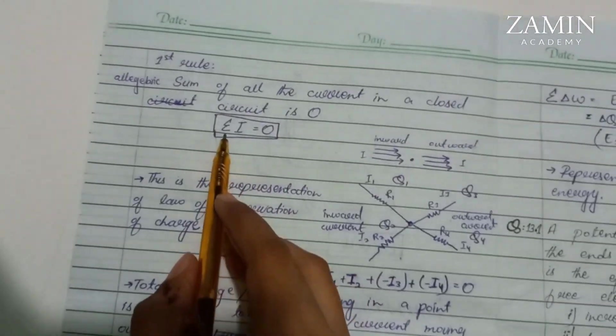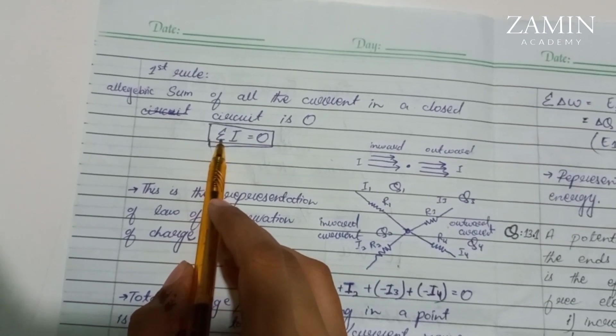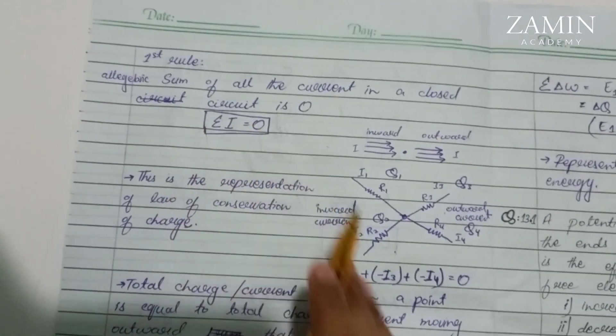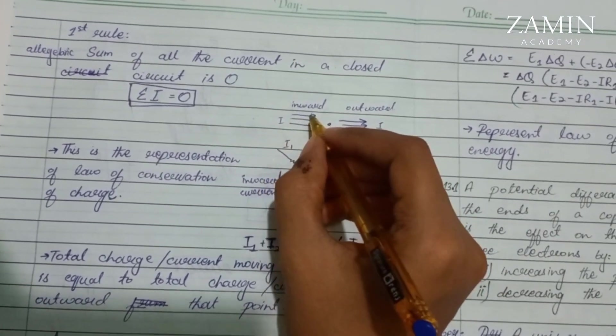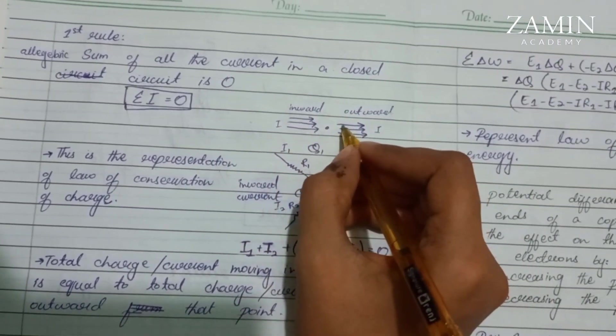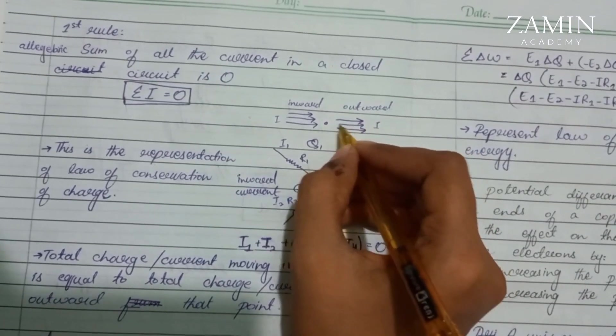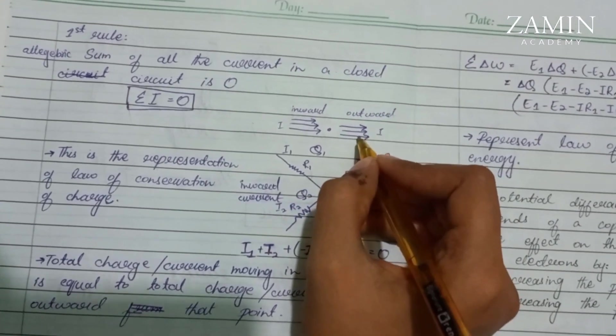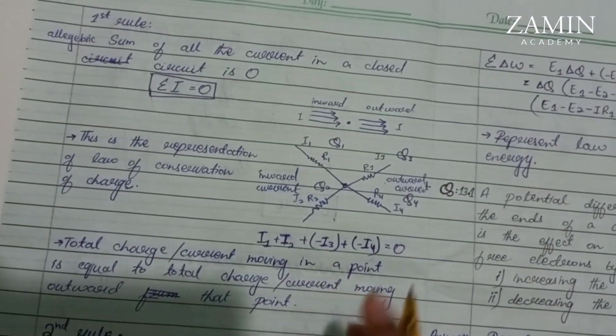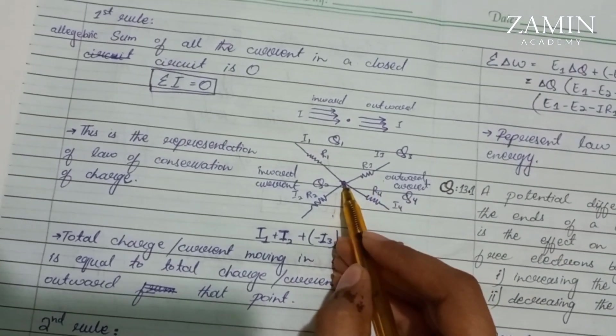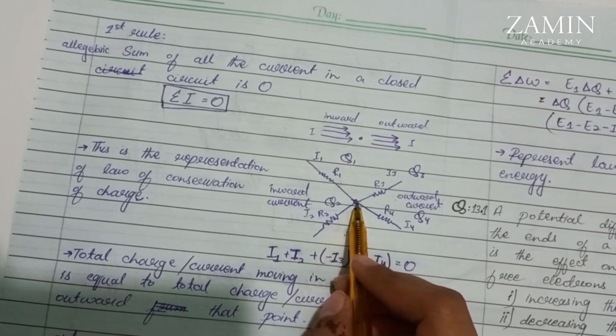We represent it like this: Σi equals zero, where Σ is the symbol of summation and i means current. This means at a particular point in a circuit, as much current enters that point, the same amount of current exits at the same time, so the sum will be zero.